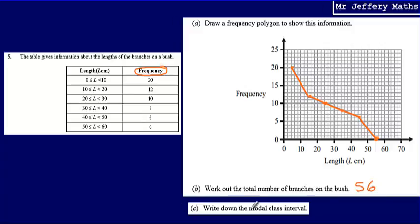Then part C, write down the modal class interval. So this is the class interval in which most of the branches fell. And what we can say is that the majority of the branches were in the 0 to 10 category because that has the highest frequency. There were 20 branches in the 0 to 10 category and that is the highest, so we're going to say that the modal class interval is between 0 and 10.